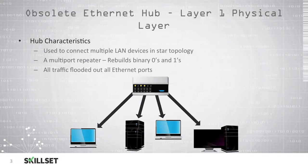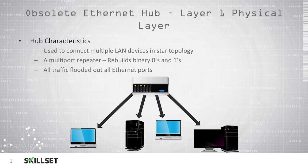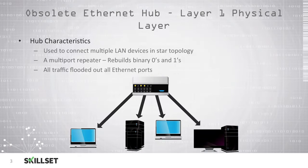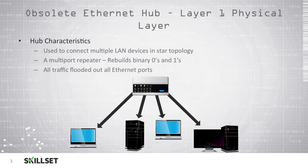Ethernet hubs are layer 1 or physical layer devices that are no longer commonly used. They were used to connect multiple local area network devices in a star topology. A hub is simply a multi-port repeater. It rebuilds binary data — zeros and ones — from one system and then transmits it to all of the other ports on the device, so all devices on the network receive the same traffic.